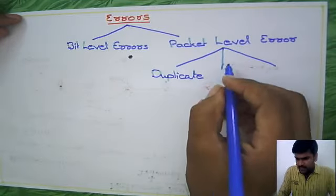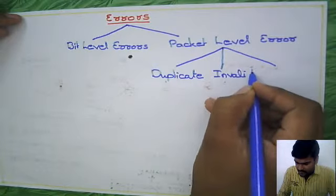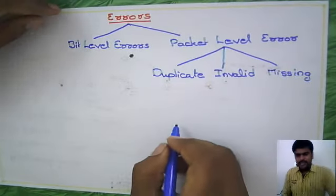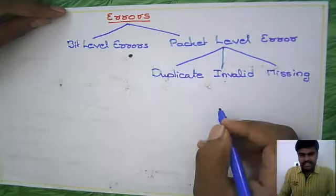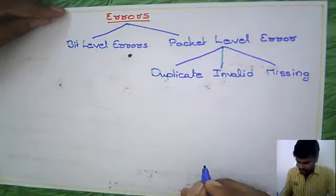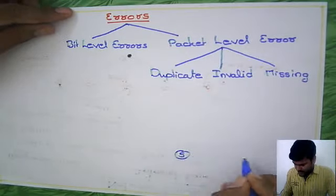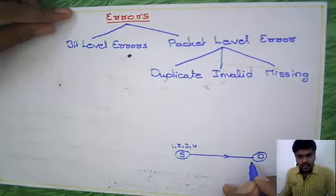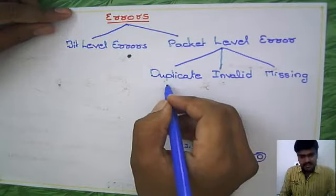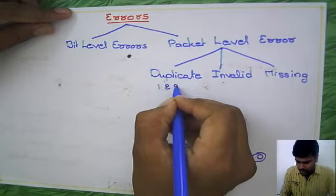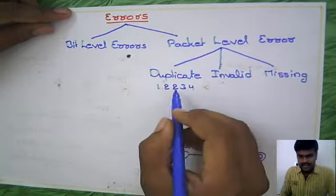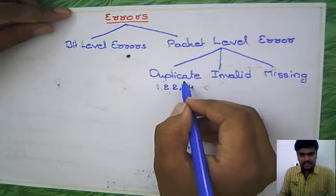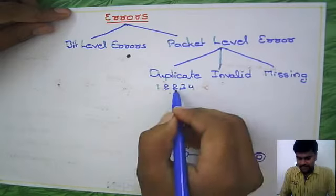First one is duplicate, second is invalid, and third is missing. Duplicate means suppose the source is sending packets one, two, three, four. But at the destination, it's received as one, two, two, three, four. The second packet is received two times. This is called a duplicate case, and this is a packet level error.